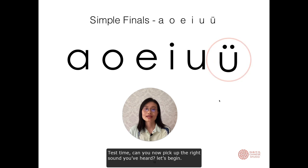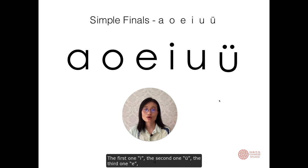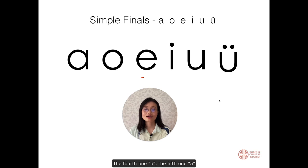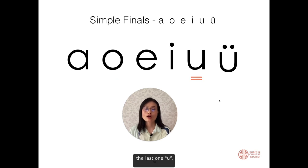Test time! Can you pick the right sound you heard? Let's begin. The first one: e or i? The second one: u. The third one: e or i? The fourth one: u. Fifth one: a. Last one: ü.